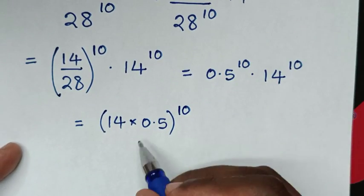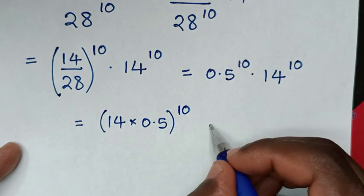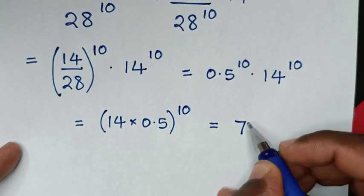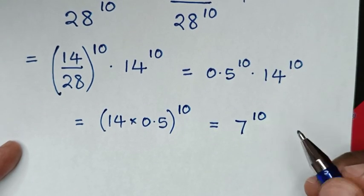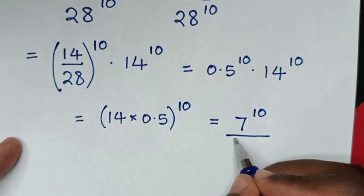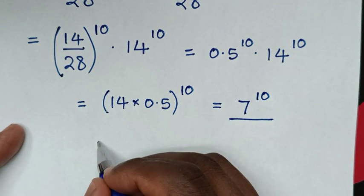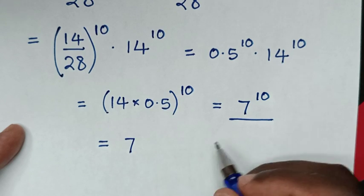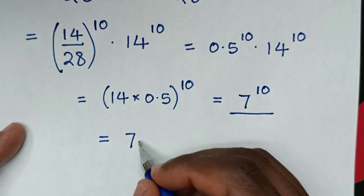Now, a half of 14 is 7, so it will be 7 power of 10. So this can be our answer, or we can say it is equal to 7 power of 10, and then we'll have 10 zeros, which gives us 70 billion.